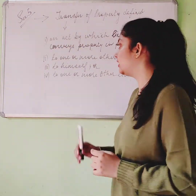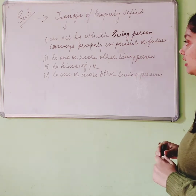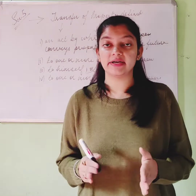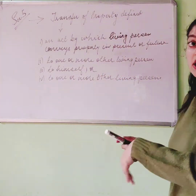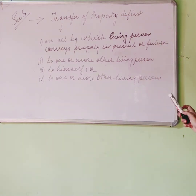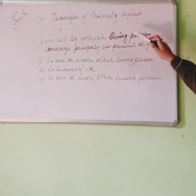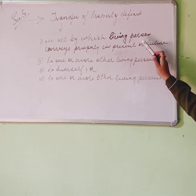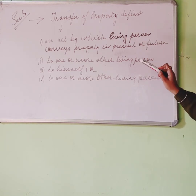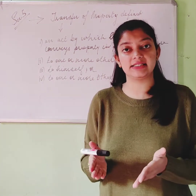There are four essential ingredients of Section 5. The first point is that the property can be transferred either in the present or in the future. This means the transferor can transfer the property with immediate effect or with a future date — meaning a specific future date can be decided from which the document or deed will become effective.